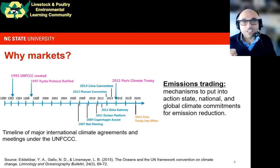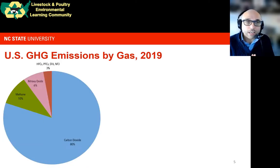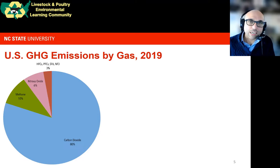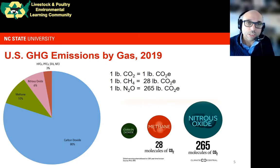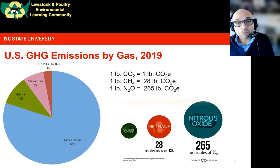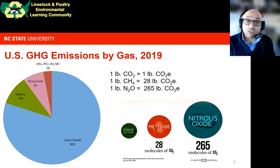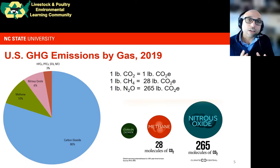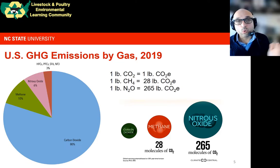Now that we've established the greenhouse gas, carbon, and market terminologies, it's important for professionals in agriculture to understand that not all these gases are created equal — some are more potent than others. A molecule of methane is 28 times as potent in the atmosphere as carbon dioxide, while nitrous oxide is 265 times as potent. Carbon dioxide equivalent, or CO2e, became the standard yardstick to measure and benchmark greenhouse gases so we can add them all together and count emissions consistently.